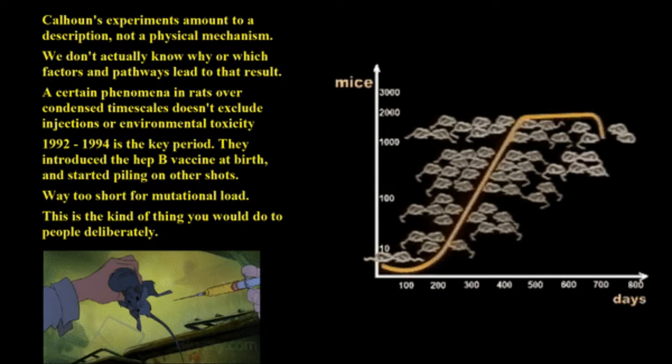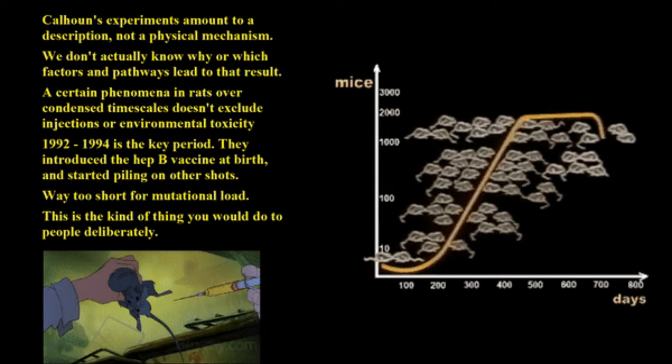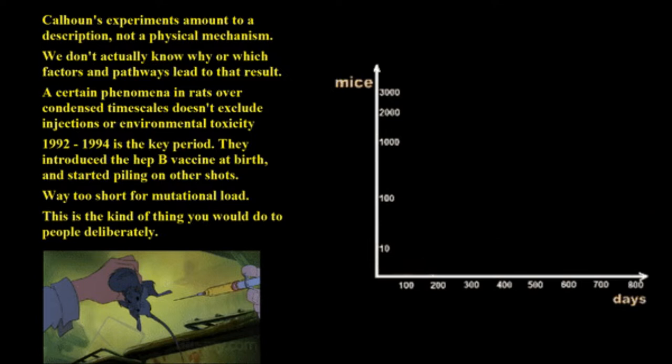Eventually the place got so crowded, and the mice became autistic and homosexual. The female mice became very aggressive, and because of that the population started dropping until it reached extinction. John Calhoun did not allow the experiment to finish because he said it was so horrible to watch — he terminated it and killed all the mice. His conclusion was: they stopped being mice.